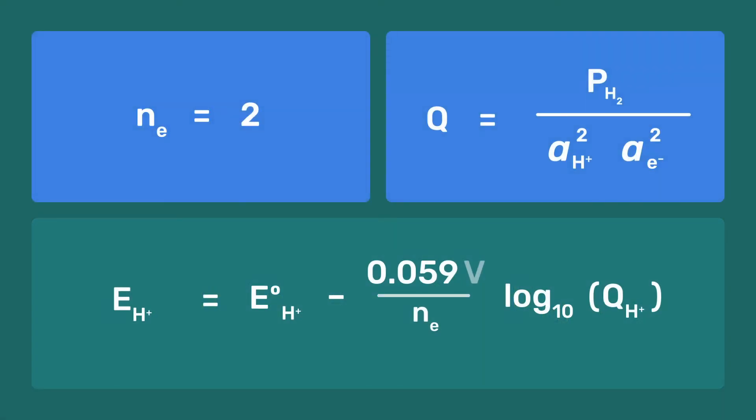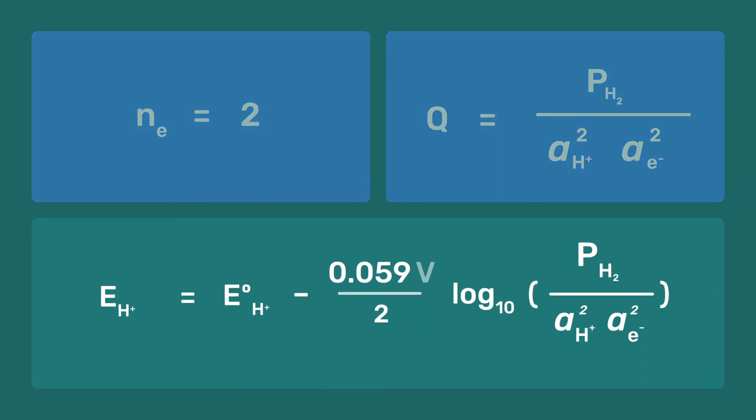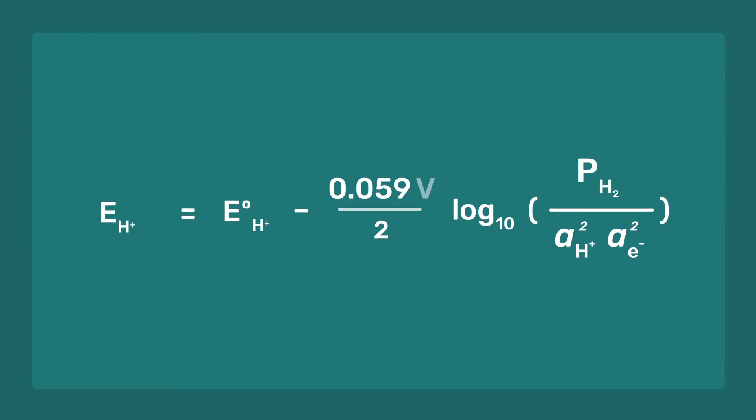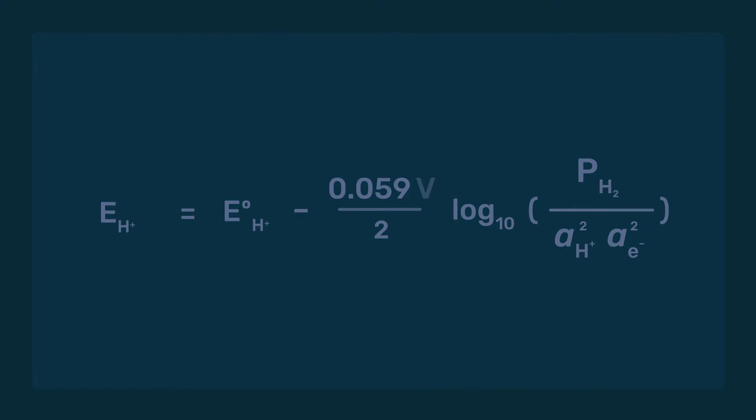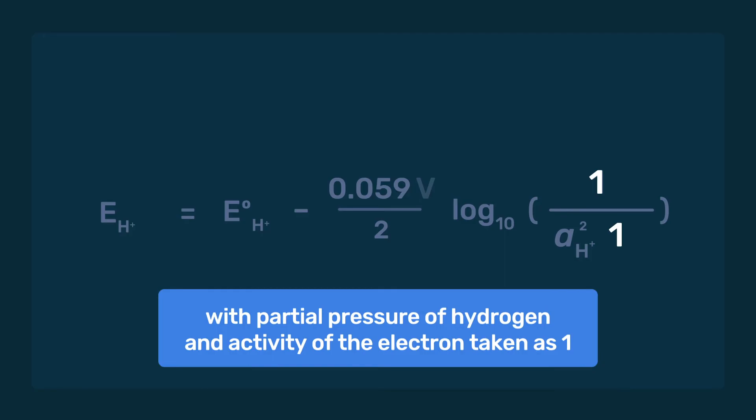Substituting these expressions into the Nernst equation, the half-cell potential for proton reduction is found to depend on the activity of the proton, as well as on the partial pressure of hydrogen and on the activity of the electron, both of which are taken to be one out of convention for the reference state.